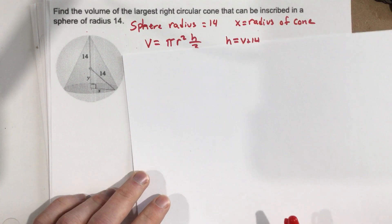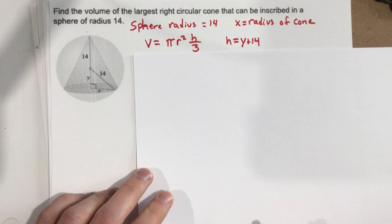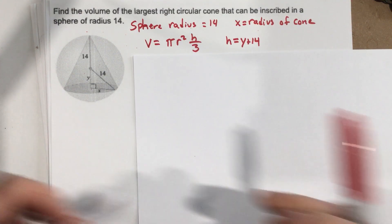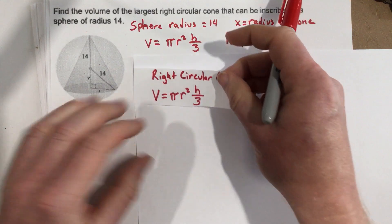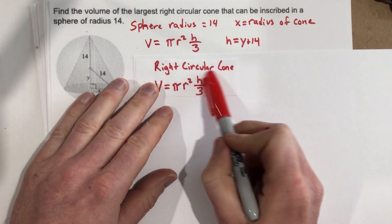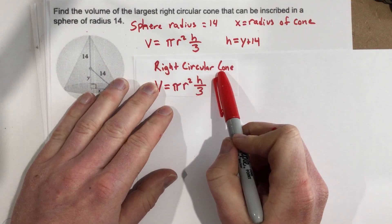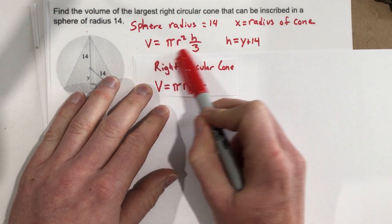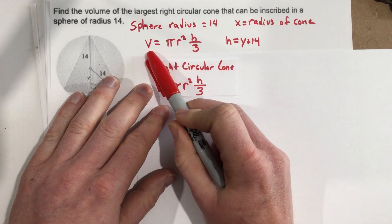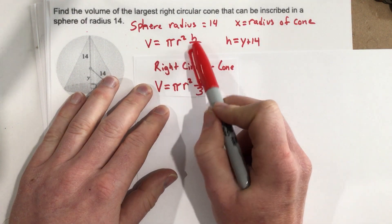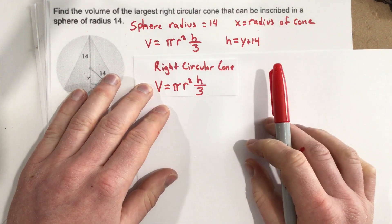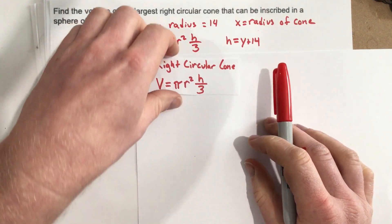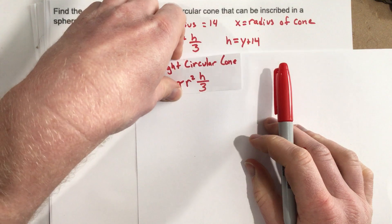The volume of a right circular cone — you probably have to look this up — is V = πr²h / 3. So that's a formula I looked up and it's one you would probably have to look up to start the problem.